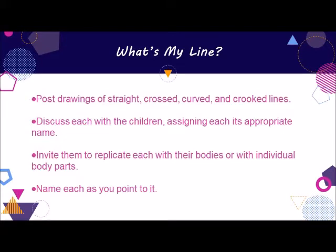Invite the children to replicate each line with their bodies or with individual body parts, and name each as you point to it. You can later add divergent problem solving to this activity by encouraging the children to find another way for each of their responses. For example, if a child demonstrates crossed lines with the arms, validate what you're seeing and then present the challenge to find another way — the child's response might be crossed fingers or legs crossed at the ankles.